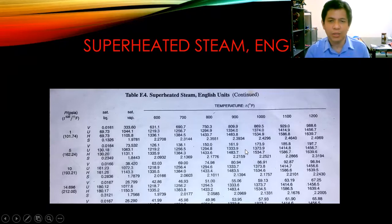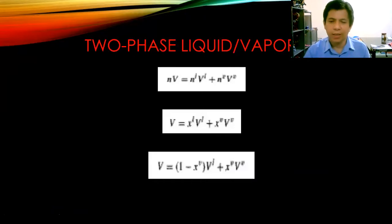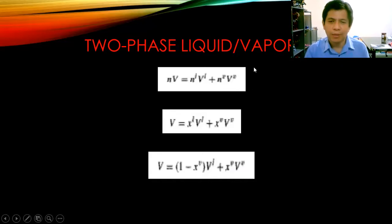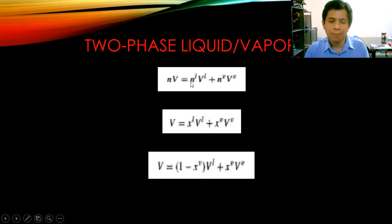Let's try to apply some equations to solve a problem. For a two-phase liquid-vapor system, the total volume N·V equals NL times the specific volume of liquid plus NV times the specific volume of vapor — where NL is the number of moles of liquid and NV is the number of moles of vapor. Adding the volume of vapor to the volume of liquid gives the total volume of the system.